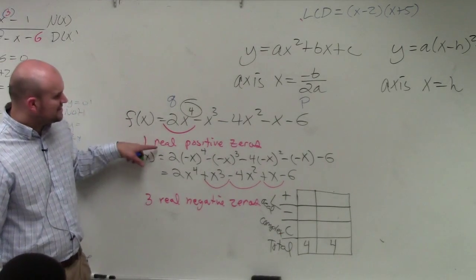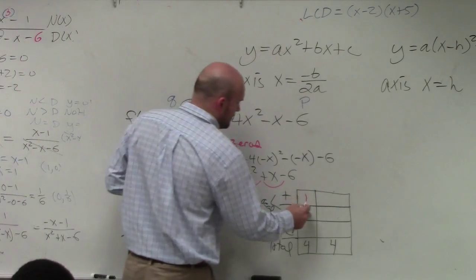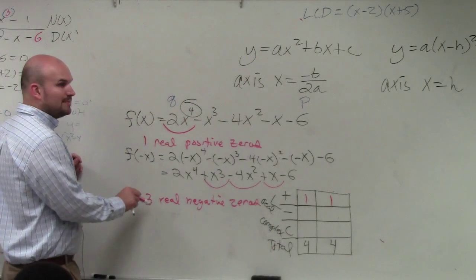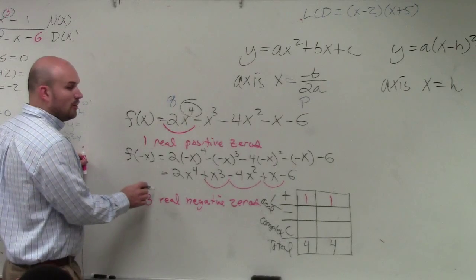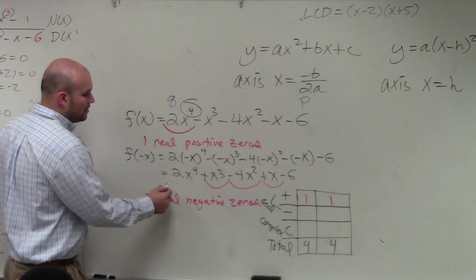So how many real zeros did we say there was? One. Always, right? That's it. One. However, I forgot to mention this here. Remember, there's one other thing I told you guys to write in. It's always three minus an even number. So it's actually three or one.